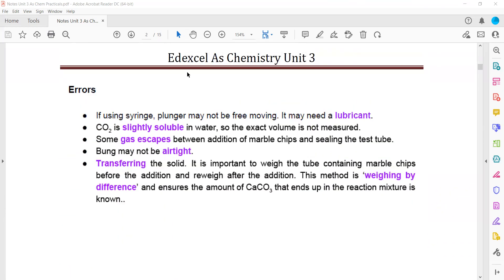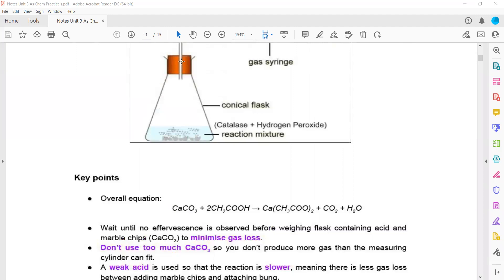What are the errors in this experiment? The plunger may not be free to move, so it must be lubricated. Carbon dioxide is slightly soluble, so the exact volume isn't measured—when CO₂ is released, some dissolves in solution and the rest comes out, reducing the measured volume.